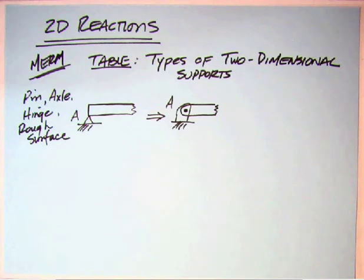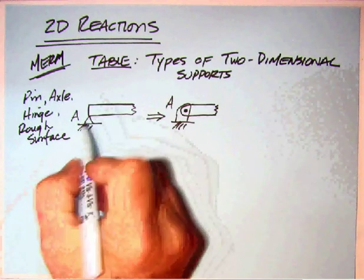The first 2D reaction, the one that I think is probably the most important, at least from what we do with beams, is what is referred to as a pin. This happens to be in that particular table in the MERM, the one at the bottom: frictionless hinge, pin connection, or rough surface. Pin axle, we had an axle in the pulleys instructional companion, or a rough surface, that would be associated with friction.